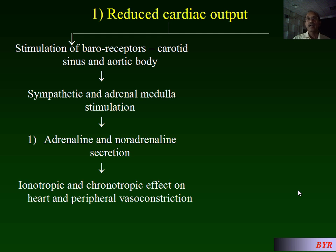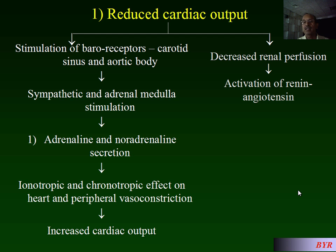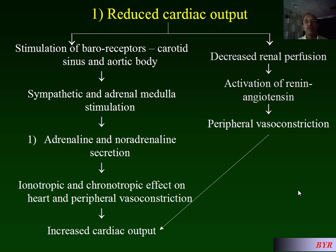This causes inotropic and chronotropic effects on the heart, plus peripheral vasoconstriction. Inotropic means increasing the force of contraction, and chronotropic means increasing the rate of contraction of the heart. This leads to increased cardiac output. Additionally, decreased cardiac output causes decreased renal perfusion, which activates the renin-angiotensin system, leading to peripheral vasoconstriction and further increased cardiac output.